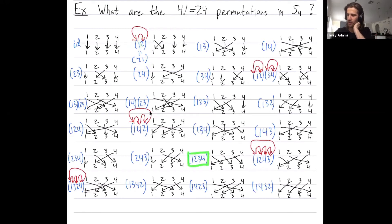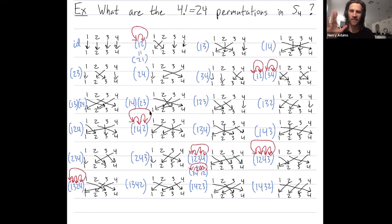For example, the cycle (1 2 3 4) could be written as (3 4 1 2), because both say that three goes to four, which goes to one, which goes to two, which goes back to three. We usually write it as (1 2 3 4) because one is the smallest element, but you could write it either way and still be correct.